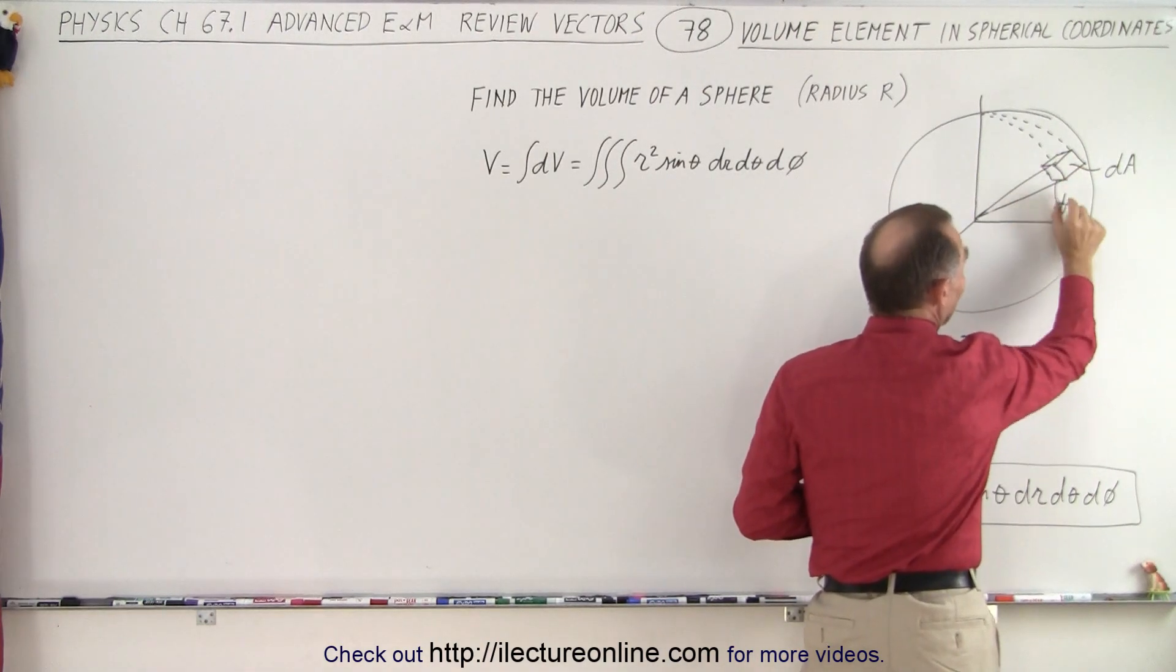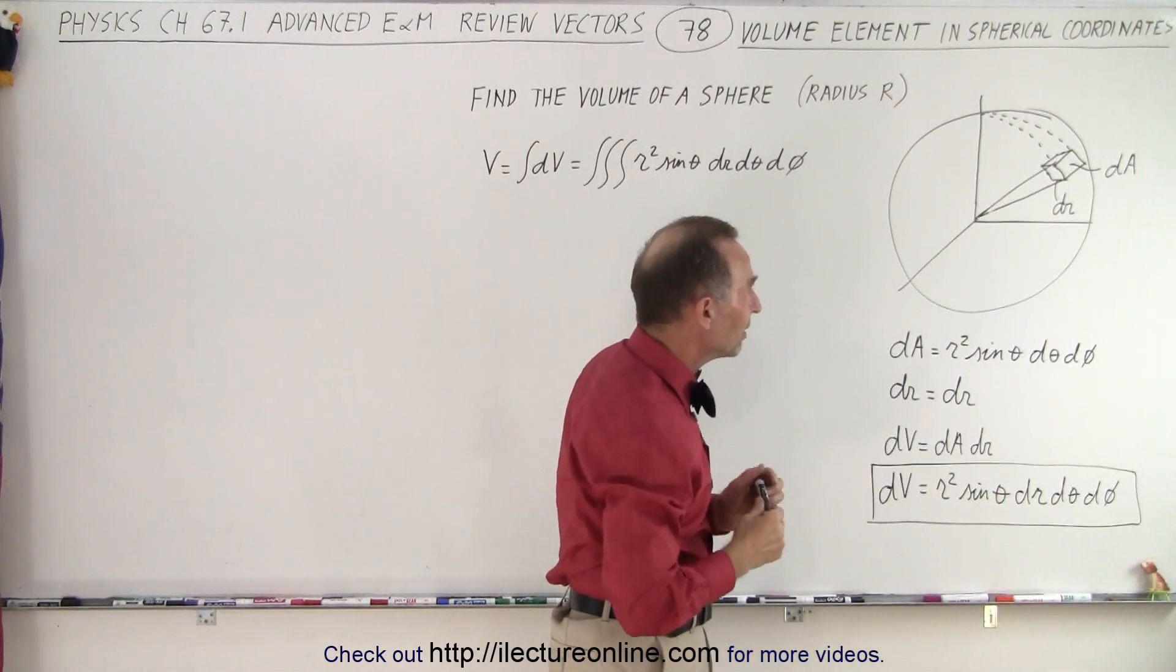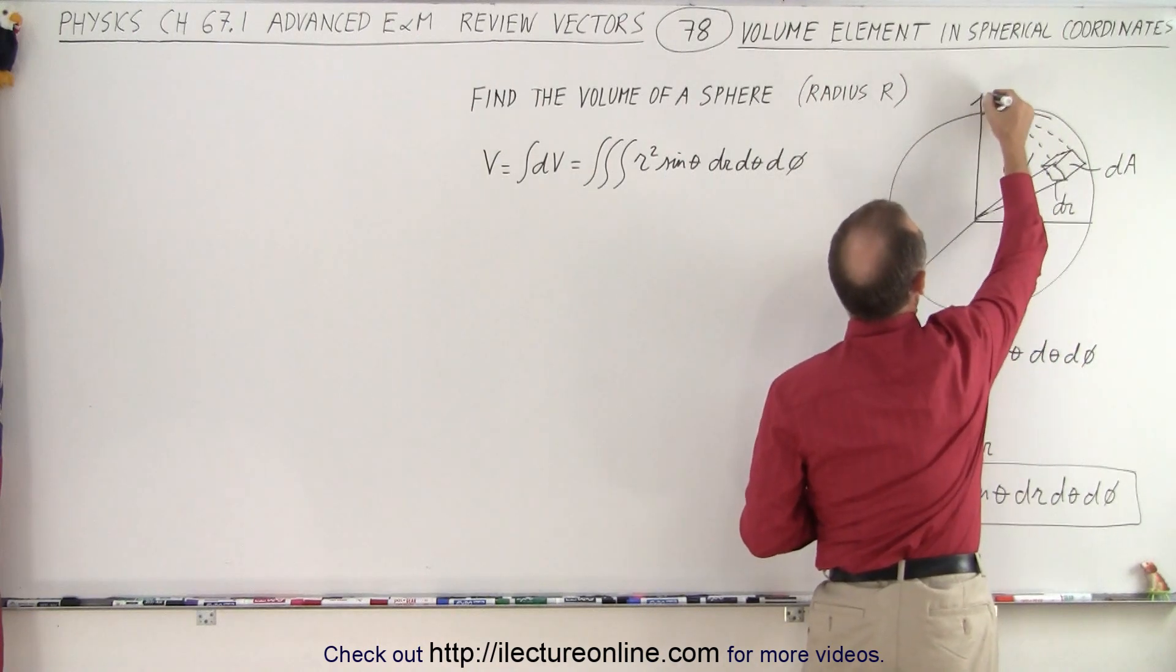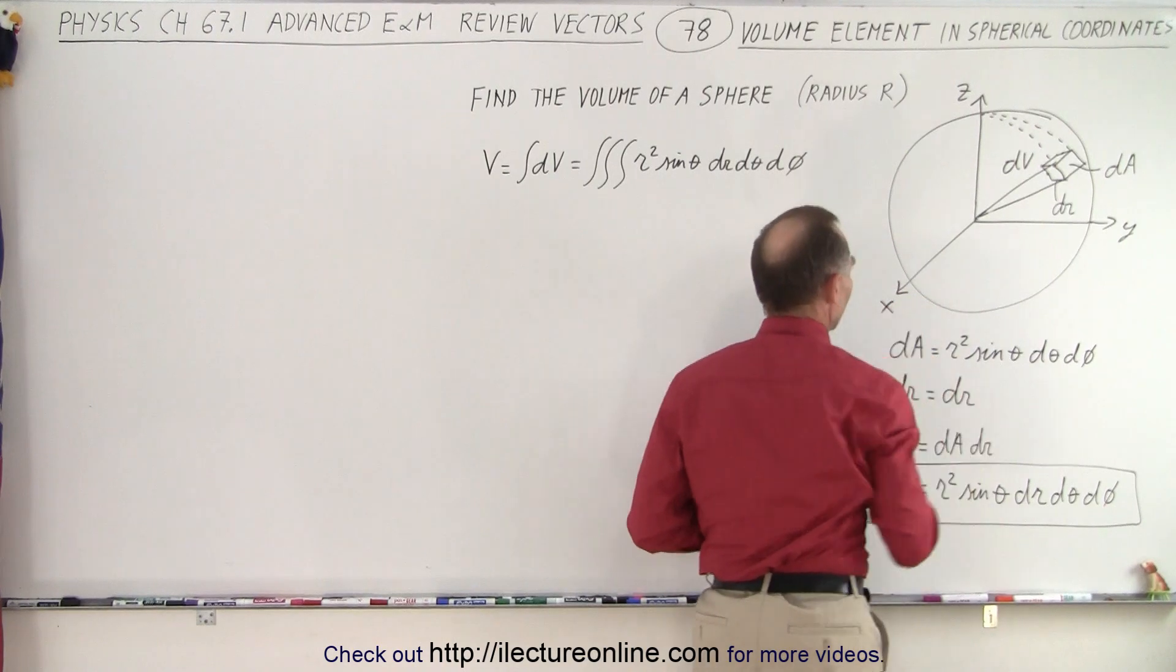So it's the dA times the dr. So here we have a small little volume element dV. So we'll go ahead and mark it as dV. So here we have the z-axis, here we have the y-axis, and here we have the x-axis.